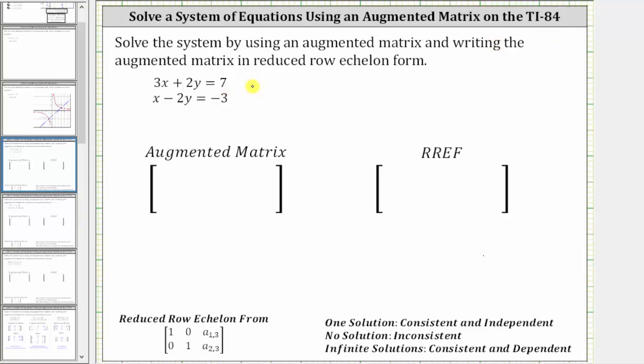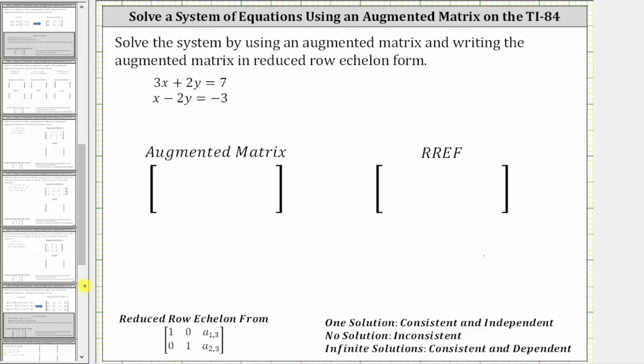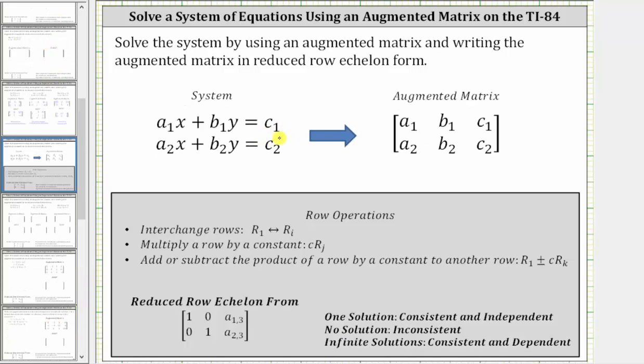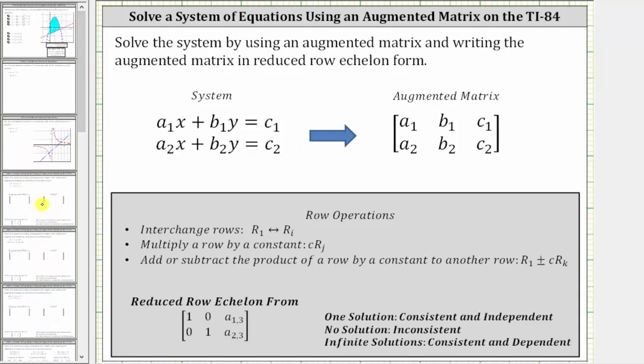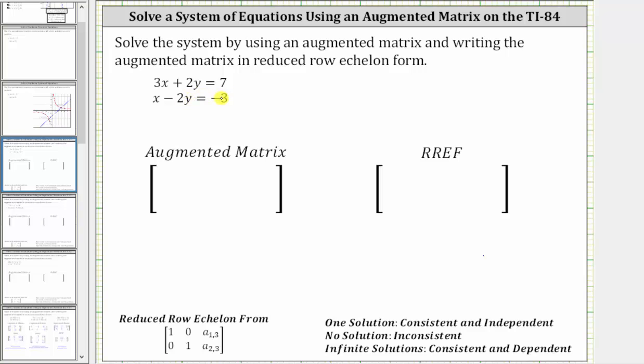To form the augmented matrix from the system of equations, we need to make sure the linear equations are in standard form, where we have the x and y terms on the left side and the constant terms on the right. If the equations are not in standard form, we do need to write them in standard form before forming the augmented matrix. Going back to our example, notice how both equations are in standard form.